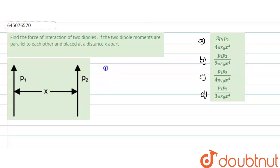The force would be F = -dU/dx. So first of all we calculate the potential energy.